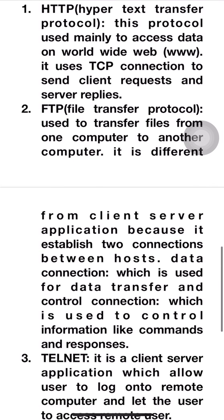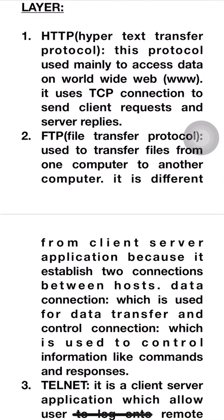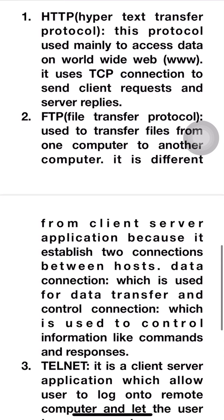The second protocol is FTP — File Transfer Protocol. It is used to transfer files from one computer to another. Two connections are established: the first is called the data connection, and the second is called the control connection. The data connection is used to transfer data, and the control connection is used to control information like commands and responses.